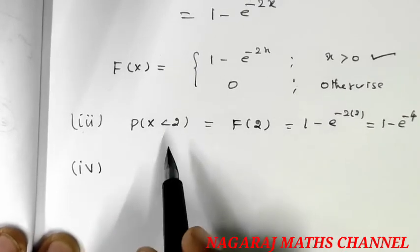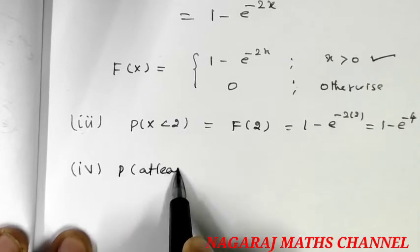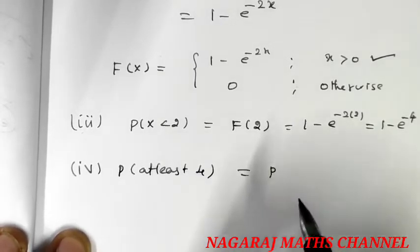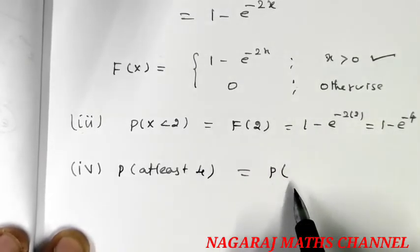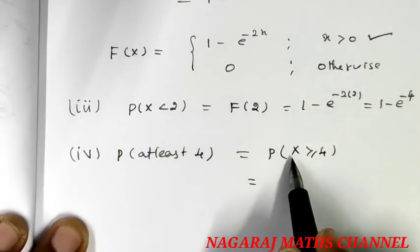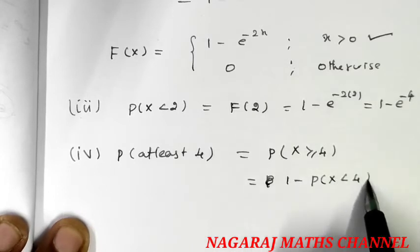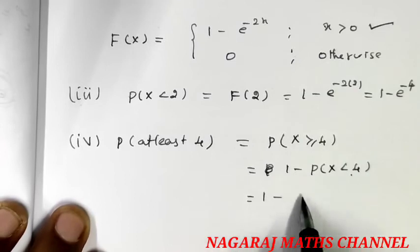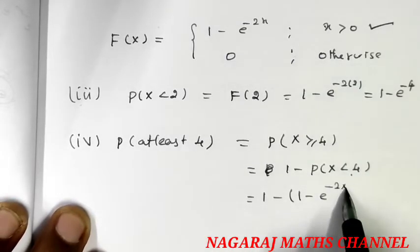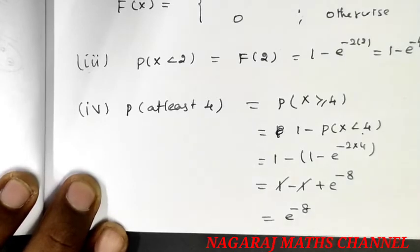For question 4, the probability that x is at least 4 means P of x greater than or equal to 4. This equals 1 minus P of x less than 4, which equals 1 minus F of 4, equals 1 minus (1 minus e to the power of minus 2 times 4), giving e to the power of minus 8.